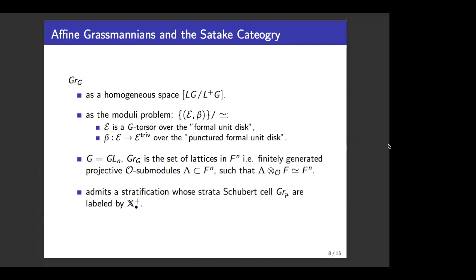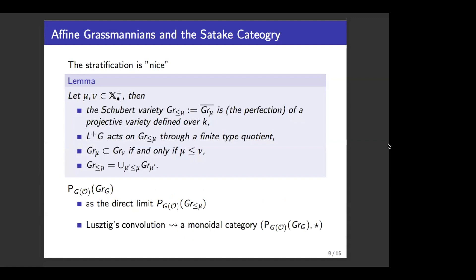From the definition of the affine Grassmannian, it's not hard to see that this space is really huge — in fact, it is infinite-dimensional. But the nice thing is it admits a nice stratification, whose strata are sometimes called Schubert cells for μ. This stratification is labeled by the dominant co-characters of G. For two dominant co-characters μ and ν, we know there is a closure of the Schubert cell for μ, which we denote by Gr_{≤μ}, called the Schubert variety. This is in fact a projective variety defined over K. In the mixed characteristic case, this is really the perfection of that particular variety.